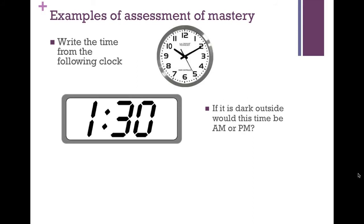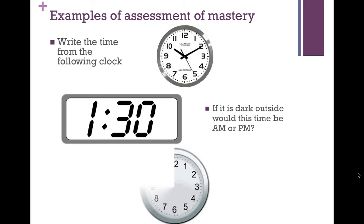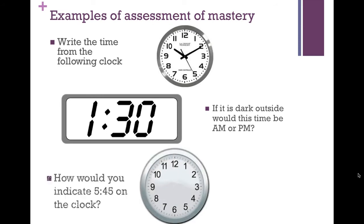A student might argue that in Alaska it could be daytime all the time, but those are rare anomalies — ninety-nine point nine percent of students will answer a.m. when it would be dark outside at one thirty. Another question has students create what five forty-five looks like on a clock, with the proper shorthand and longhand. But again, this is still just applying what they know — telling and writing time at the standard's level.